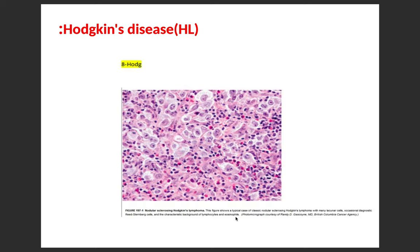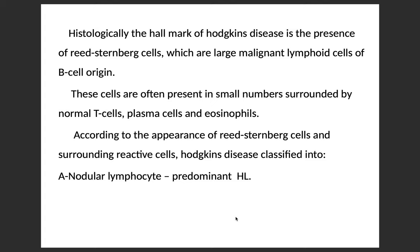First we talk about Hodgkin's disease or Hodgkin's lymphoma. Histologically, the hallmark of Hodgkin's disease is the presence of Reed-Sternberg cells, which are large malignant lymphoid cells of B cell origin. These cells are often present in small numbers and usually surrounded by normal T cells, plasma cells, and eosinophils. According to the appearance of Reed-Sternberg cells and surrounding reactive cells, Hodgkin's disease is classified into two types.